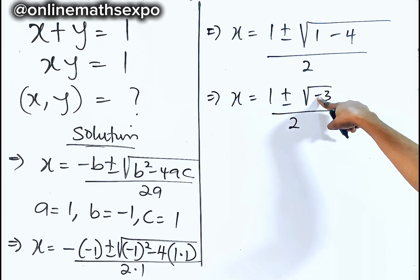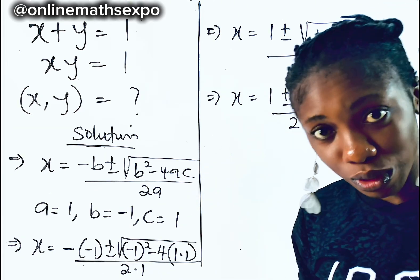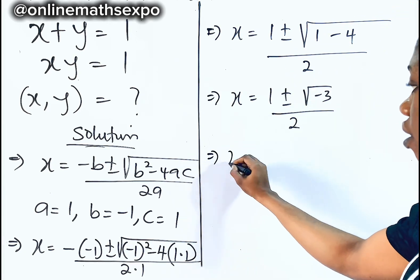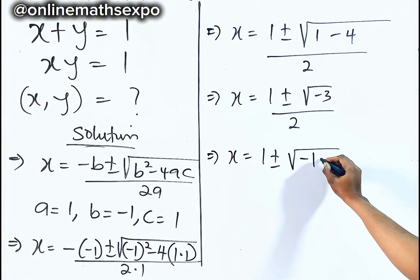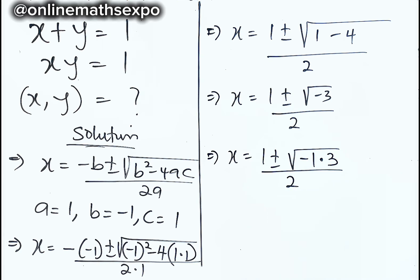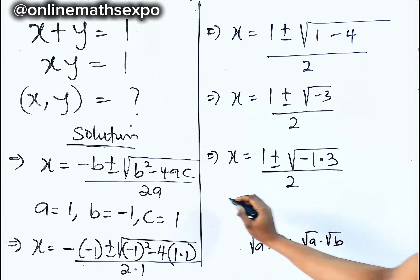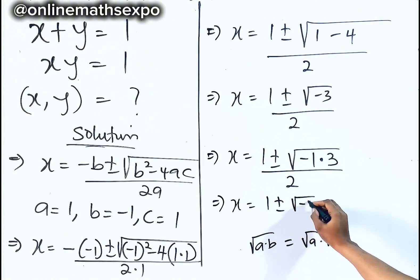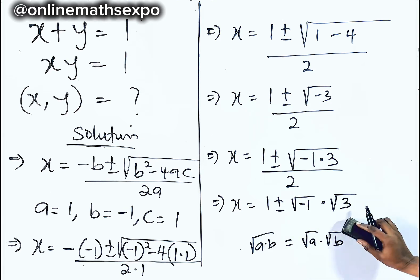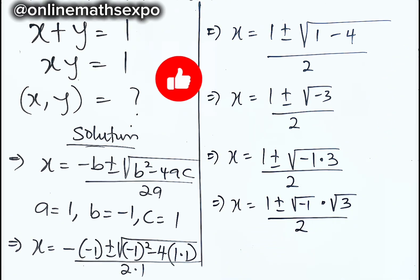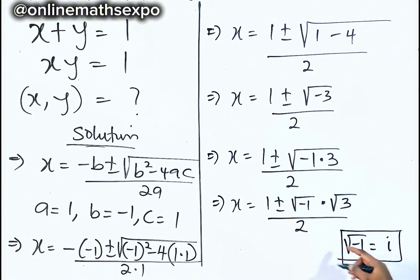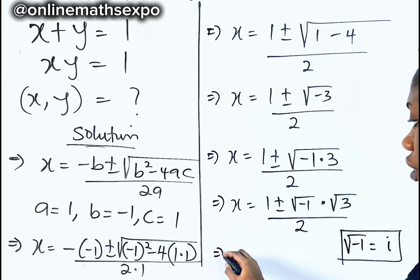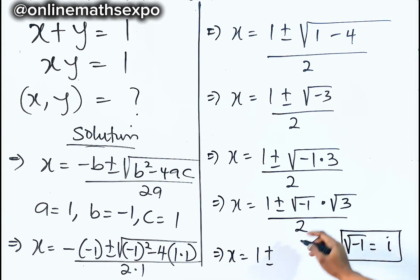We observe that the value inside the square root is negative, which means we are getting a complex solution. To handle this, we write x equals 1 plus or minus the square root of negative 1 multiplied by 3, divided by 2. Using the property that the square root of a times b equals root a times root b, we get 1 plus or minus root of negative 1 times root of 3, all divided by 2. Since root of negative 1 equals the imaginary unit i, this gives x equals 1 plus or minus i root 3, divided by 2.